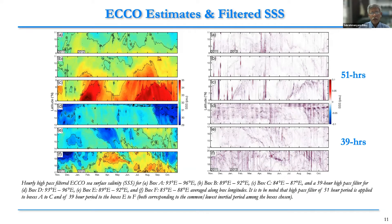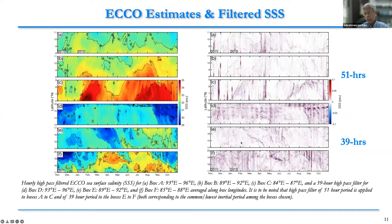We also compared all boxes A, B, C, D, E, F. We filter A, B, C with 51 hours and 39 hours. You can see that in the Northern Bay of Bengal, stronger internal waves are observed where freshwater flux is coming from the various rivers, rather than on the southern side.